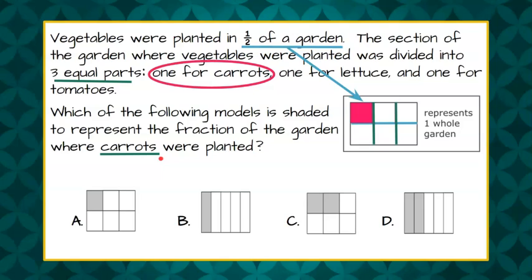Now we are asked to determine which one of these four choices represents this. Well the first thing I can do is rule out B because we're looking for carrots and B is one out of five and we have six sections in our garden.